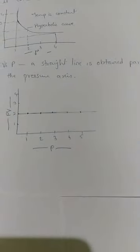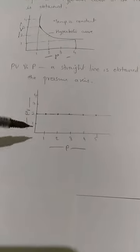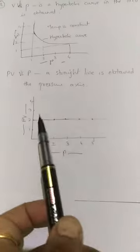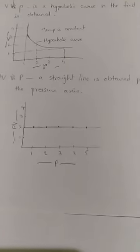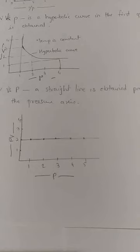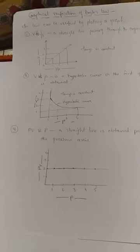In the third graph, pressure × volume (PV) versus pressure is plotted. This gives a straight line parallel to the pressure axis. On the axes we again take values 1, 2, 3, 4. Whenever we draw a graph of PV versus pressure, it always remains a straight line parallel to the pressure axis — this is the third verification of Boyle's Law. In the exam, Boyle's Law and its mathematical expression are always asked. This graphical verification is for your understanding. Good day, children.